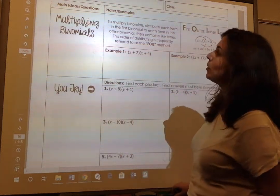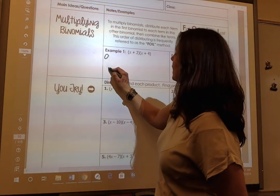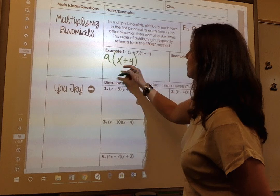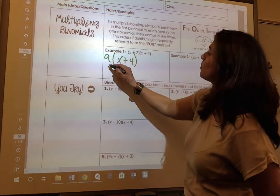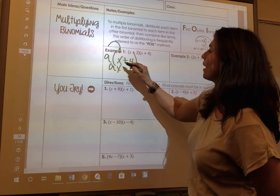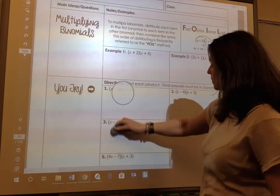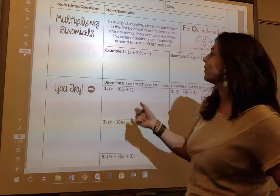So it's similar to the last section we did except before we did one variable times a polynomial. So when I multiply, I distribute it. A times x plus 4a. Right? Well now I have a polynomial times a polynomial. So I can do the FOIL method.